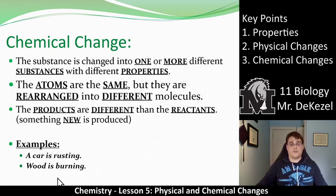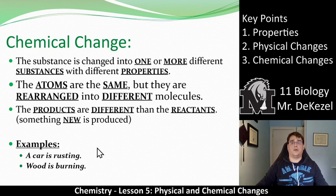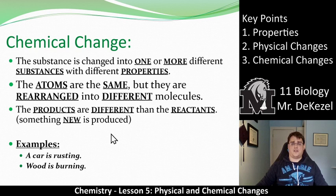Some examples of chemical changes: if a car is rusting, you start with a metal and eventually it degrades, gets rusty, and turns into something else — iron oxide is what rust is called. When you have wood and you burn it, it starts off as wood but eventually turns into ash; it is chemically different and has different properties. And if you cook an egg — when you start with a raw egg and cook it, it turns into a completely different thing with different taste, texture, and nutrient value. That is a chemical change.